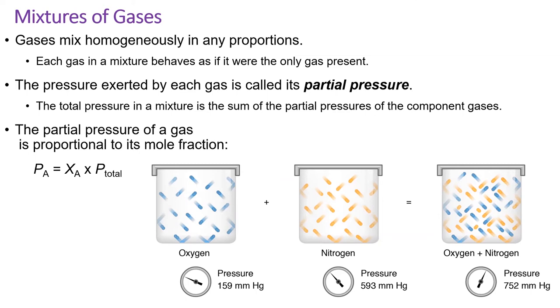This also means that the partial pressure of a gas is equal to its mole fraction in the container times the total pressure in the container. Recall that mole fraction x is equal to moles of one compound divided by total moles.